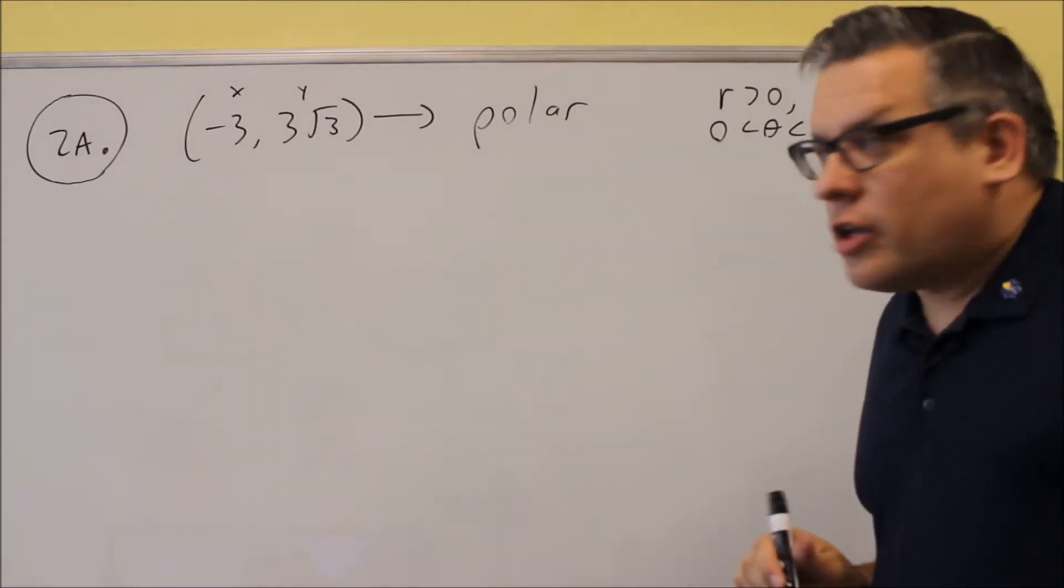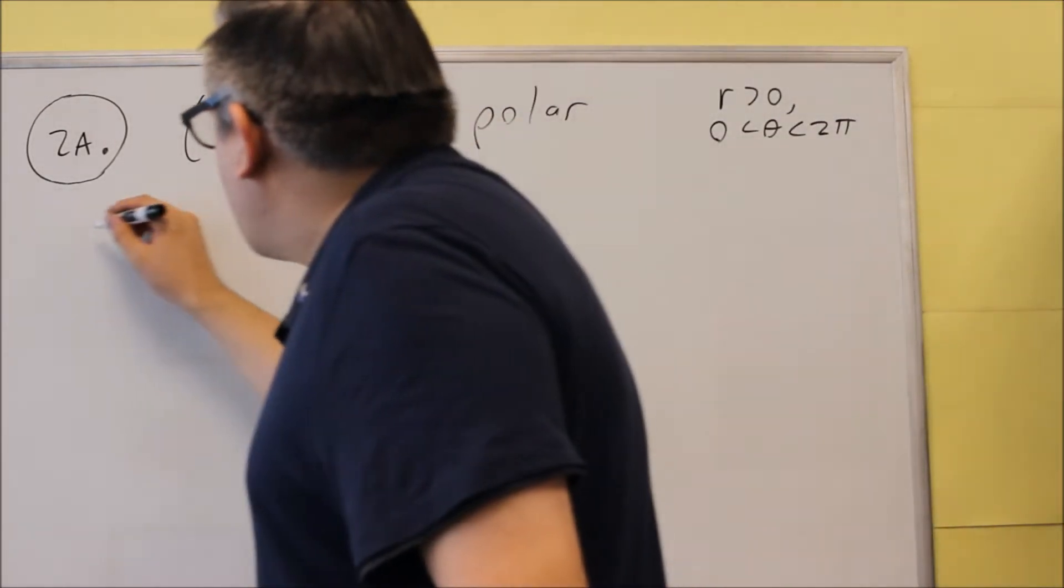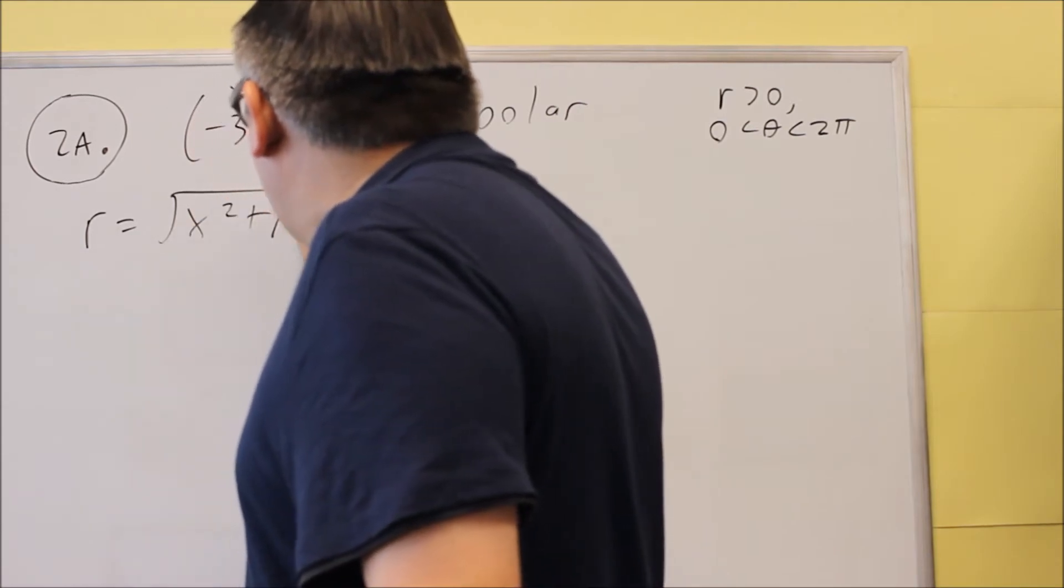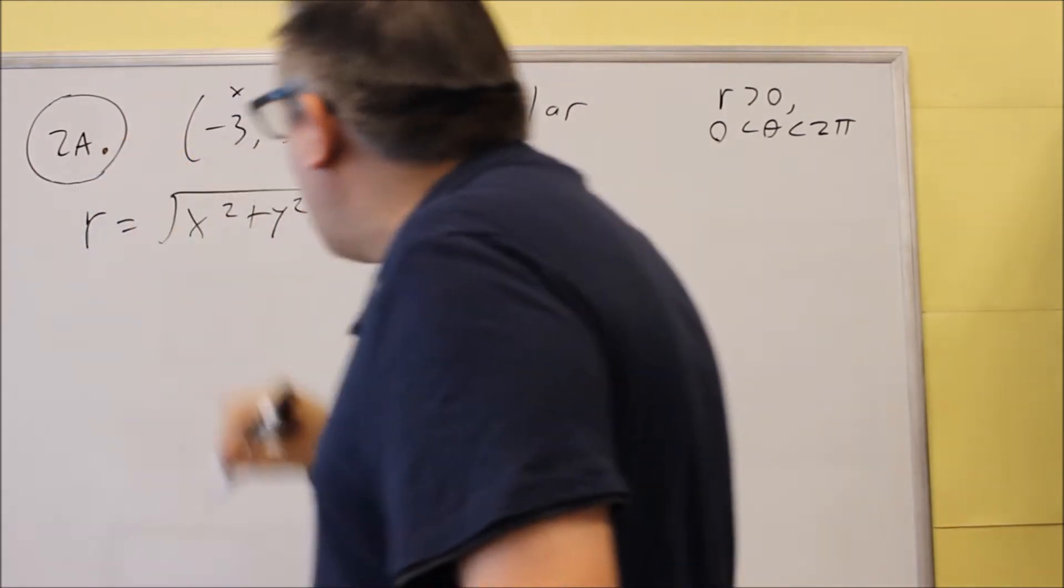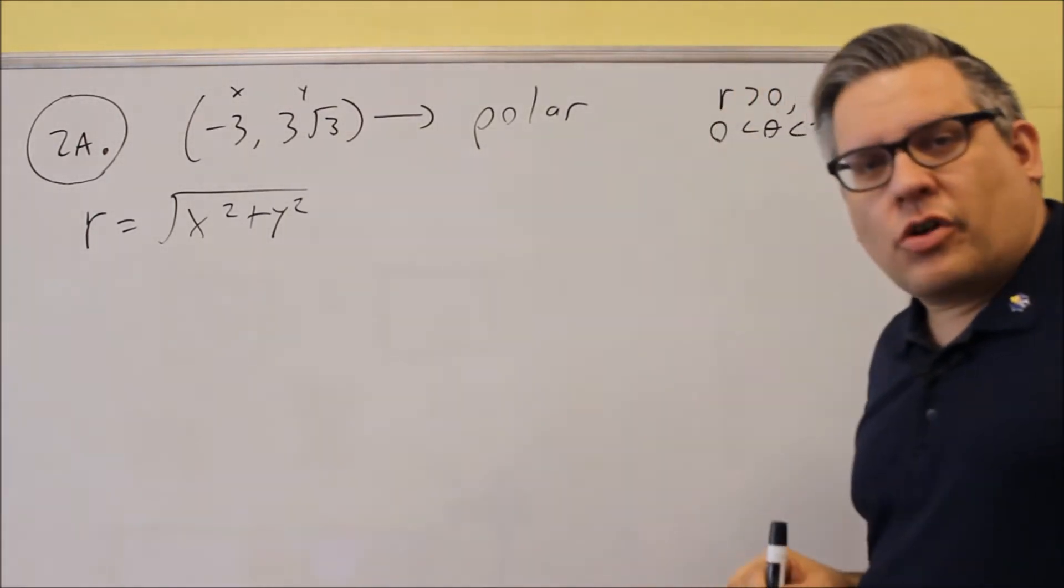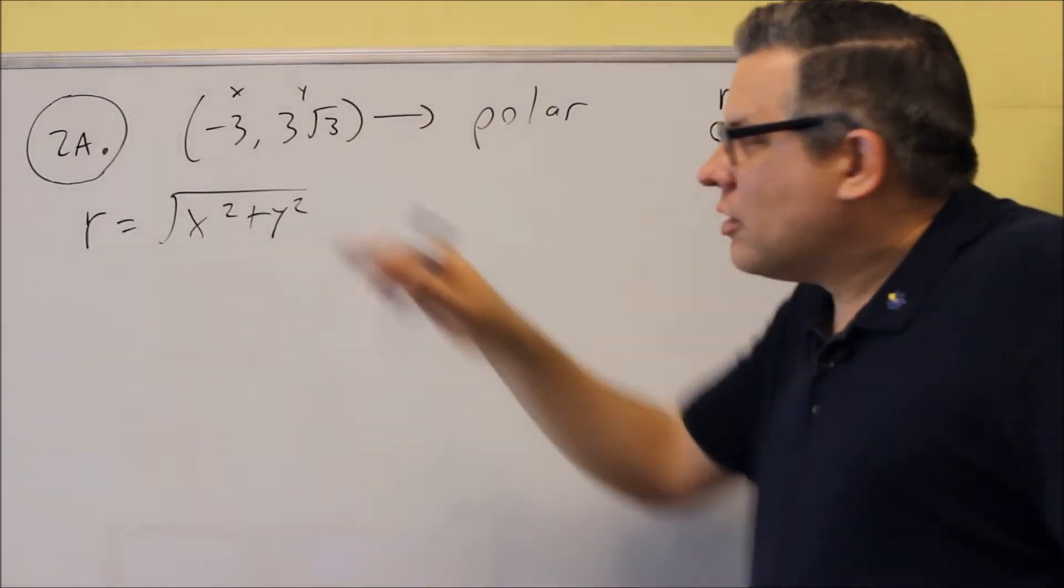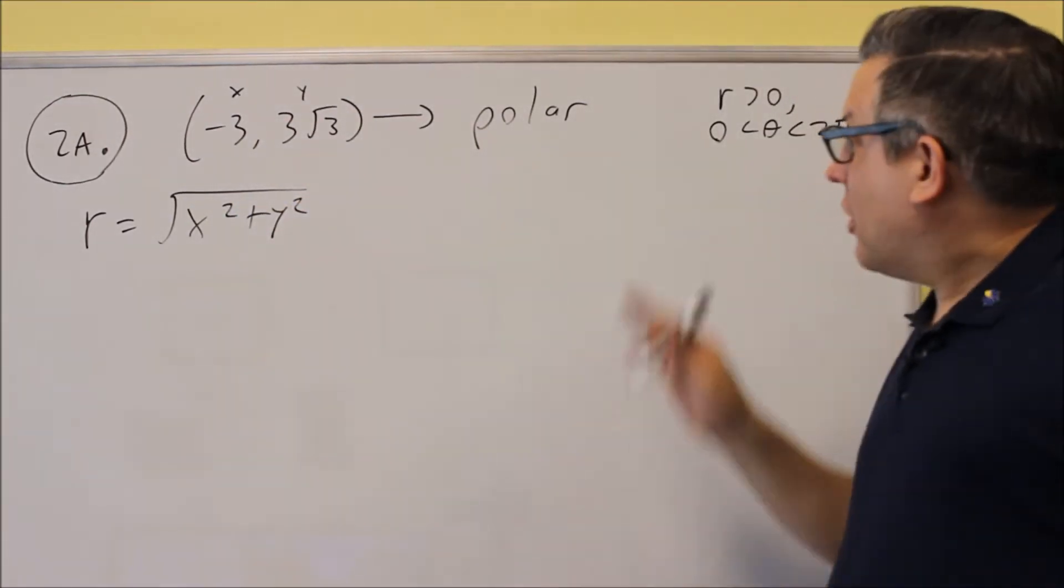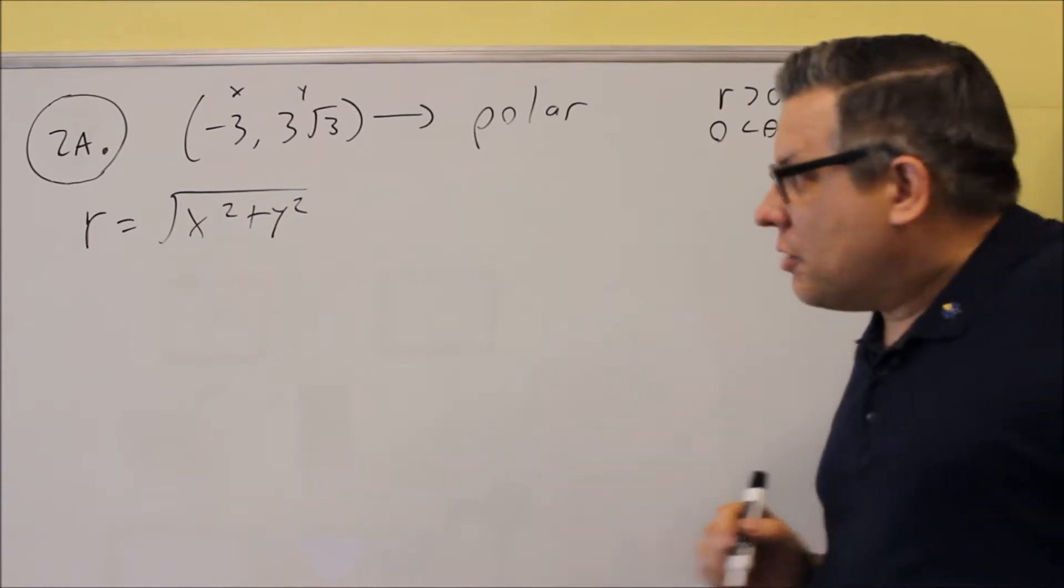Here's the first formula that you want to know for this one. The formula for R is the square root of X squared plus Y squared. That right there will get you the R in one step. We're using the positive square root because R has to be greater than zero.